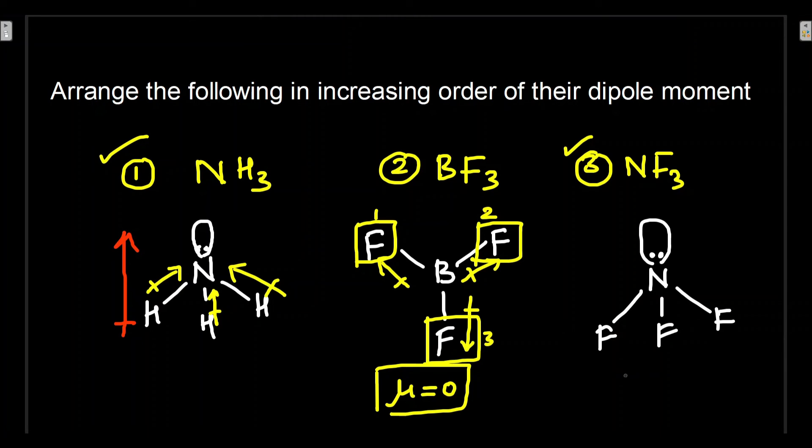Come to NF3. Here fluorine is more electronegative than nitrogen—that is a change. So fluorine will pull this side, this side, and this side. And then electron pull by the lone pair will be this side, but overall net resultant will be this side. But again there is some opposite pulling also.